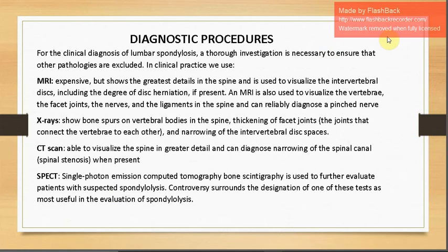Diagnostic procedures include MRI, X-ray, and CT scan. X-ray is the most accessible and cost-effective, clearly showing bone spurs on vertebral bodies, thickening of facet joints, and narrowing of intervertebral spaces. MRI, though more expensive, shows greater detail — it can visualize the intervertebral disc, degree of disc herniation, vertebrae, facet joints, nerves, and ligaments, and can reliably diagnose a pinched nerve.